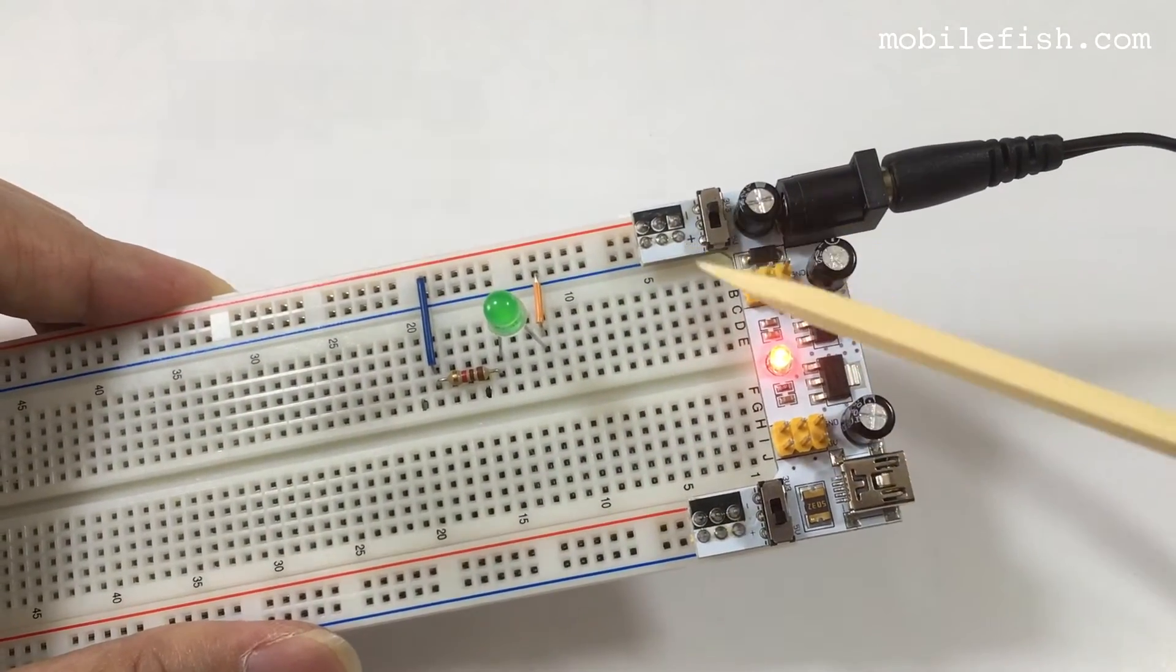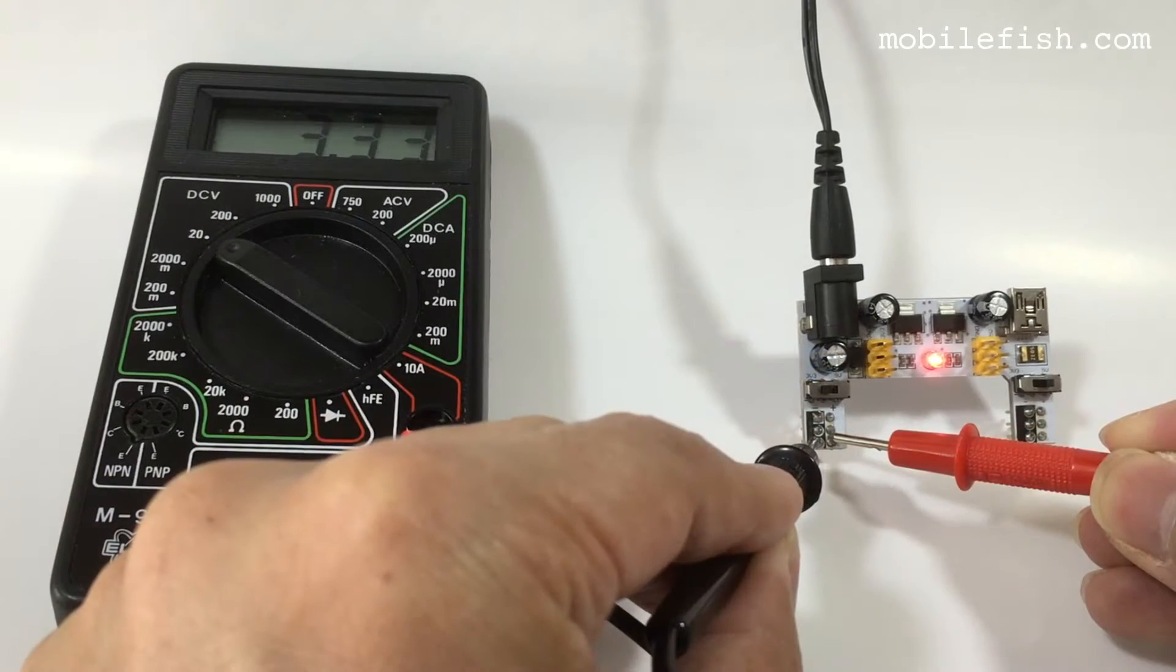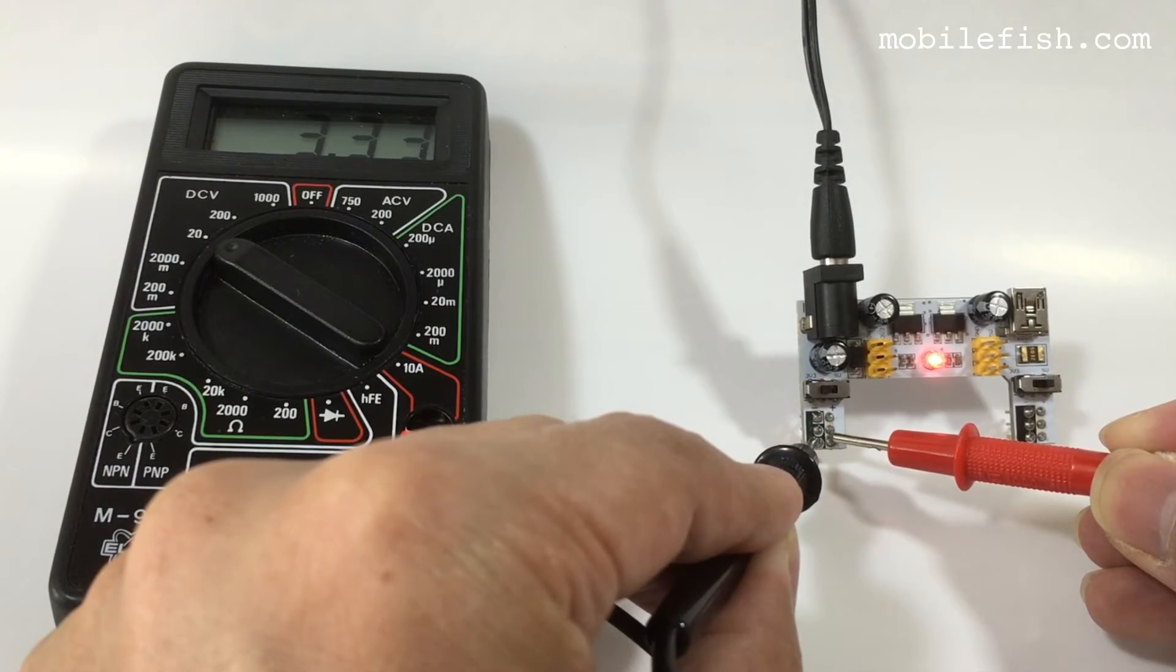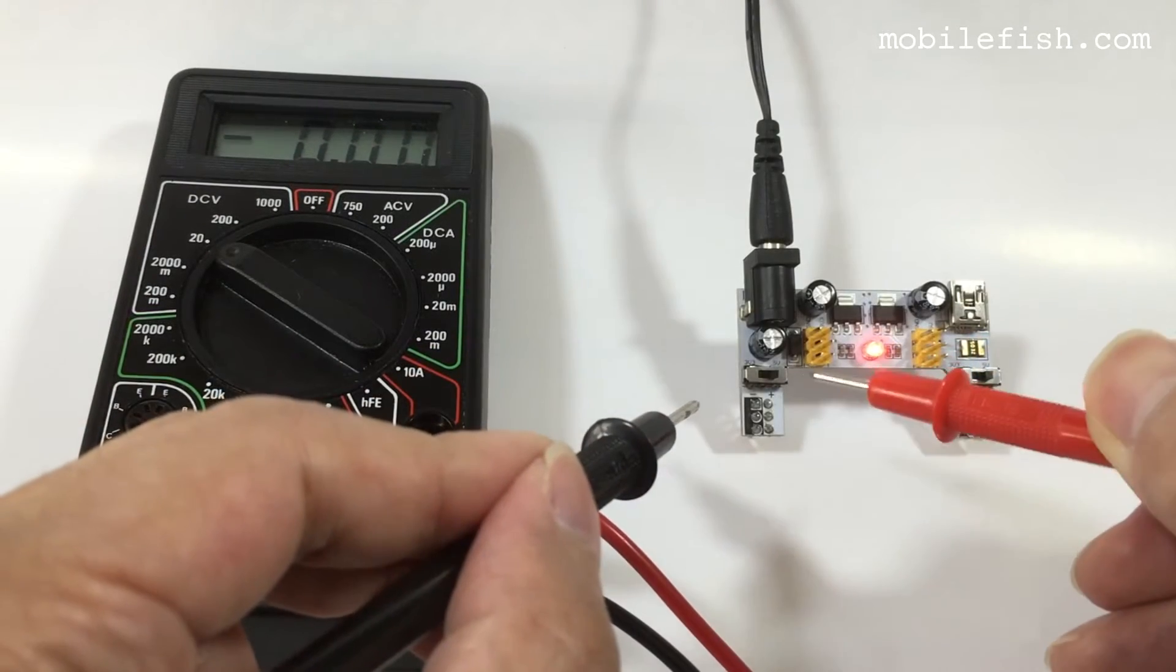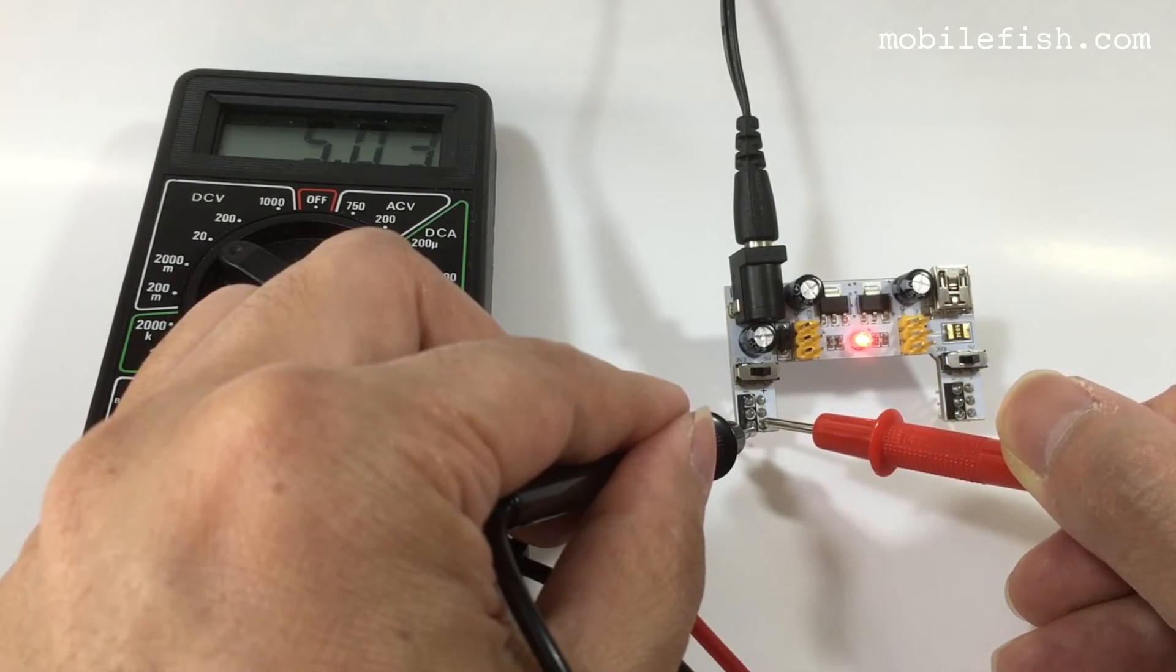Let's measure the power output over here. The switch is selected 3.3V. As you can see it is 3.3V over here. The switch is now selected 5V. As you can see the voltage is 5V.